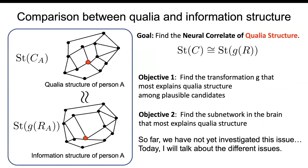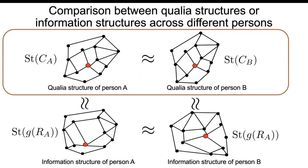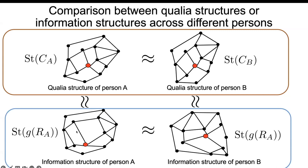Our final goal is making the correspondence between qualia structure and information structure, but so far we have not yet investigated this issue. Today I will talk about something different: comparing qualia structures from different persons. We have a qualia structure of person A and person B, and the question is how similar are these qualia structures — is my red the same as your red? We also have information structures from neural activity of person A and person B, and the question is whether these two information structures are similar across subjects.